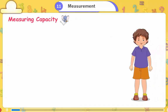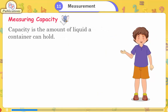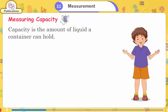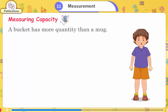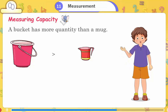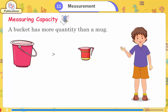Measuring capacity: capacity is the amount of liquid a container can hold. For example, a bucket holds more liquid than a mug — a bucket is larger than a mug.